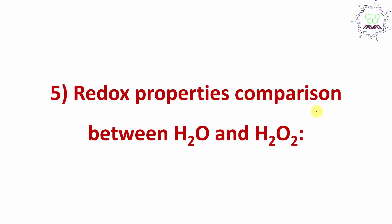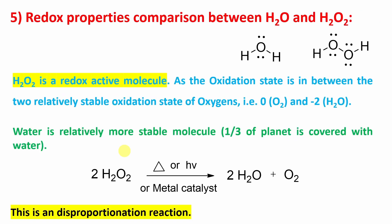The next point is redox property comparison between water and hydrogen peroxide. Redox property is one of the important properties of H2O2 — it is a redox-active molecule. Why? Because the oxidation state of each oxygen in hydrogen peroxide is −1, which is between its two stable oxidation states of −2 and 0, making it a redox-active molecule.